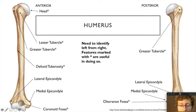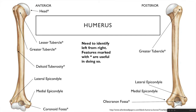Looking at the humerus: it has anterior, posterior, medial, and lateral sides. The head of the humerus is medial, forming the shoulder joint with the glenoid cavity. Immediately following the head are the lesser tubercle and greater tubercle — bumps that allow muscles to attach. From the anterior side, both tubercles are visible; from the posterior side, only the greater tubercle is seen. The deltoid tuberosity is a rough region allowing the deltoid muscle to attach.